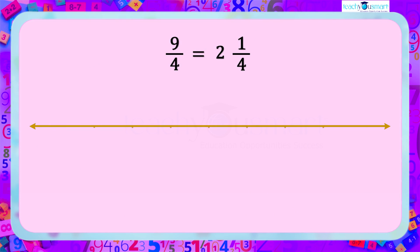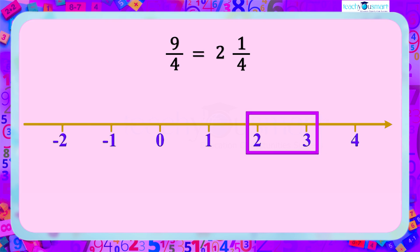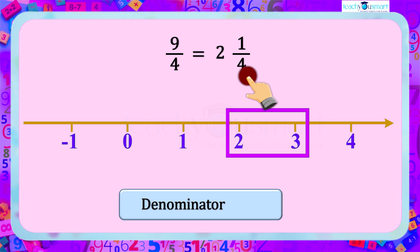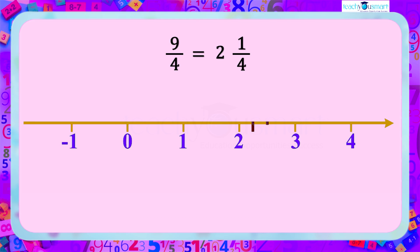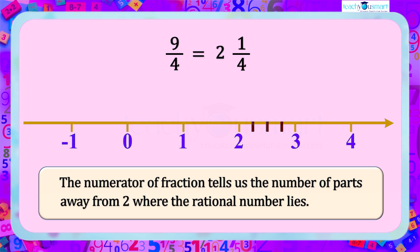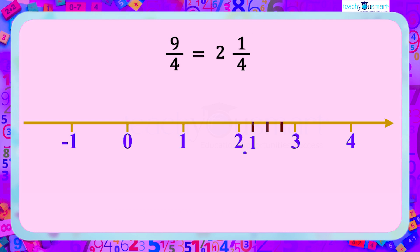So draw a number line. Since we determined that 9/4 lies between 2 and 3, let's focus on the segment between 2 and 3. The denominator D of the fraction 1/4 is 4, so divide the segment between 2 and 3 into 4 equal parts. The numerator R of the fraction tells us the number of parts away from 2 where the rational number lies. Here R equals 1, so we take 1 part from 2 and mark 2 and 1/4, or 9/4, there.